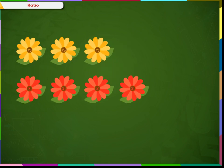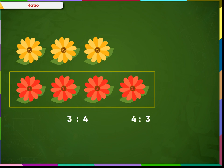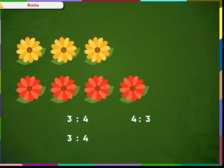A ratio has two terms. These two terms are not interchangeable. The ratio 3 is to 4 is different from 4 is to 3. For example, when we say for every 3 yellow flowers there are 4 red flowers, we write the ratio as 3 is to 4. But when we interchange the order of the terms, if it is 4 is to 3, then it would mean for every 4 yellow flowers there are 3 red flowers, which is wrong and does not satisfy our situation.